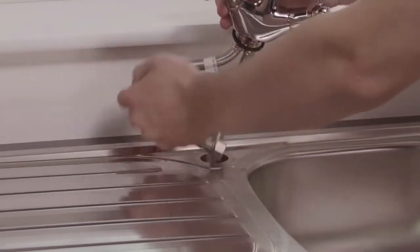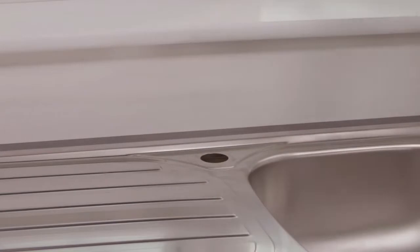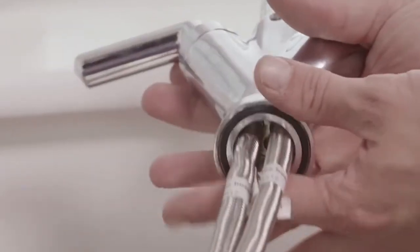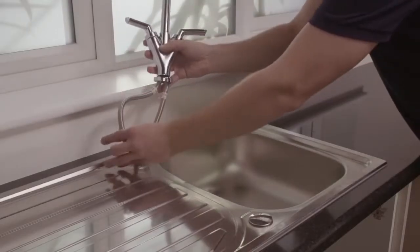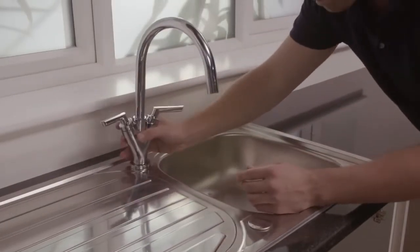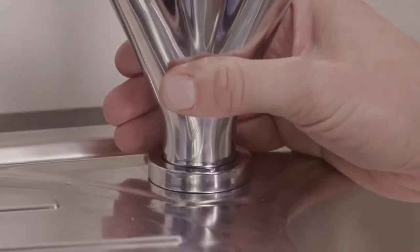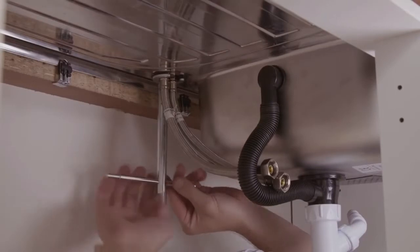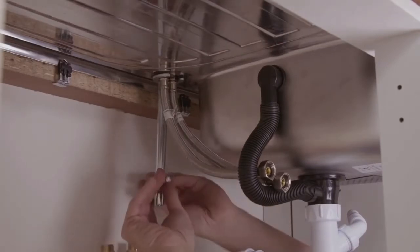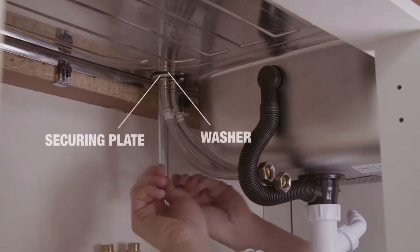Be careful, as the tap hole in the sink is very sharp. Place the new tap into the hole or holes, making sure you put the plastic seal between the tap and the sink. Then screw the tap down to the sink from underneath, remembering to put the washer and securing plate in first, between the nut and the sink.